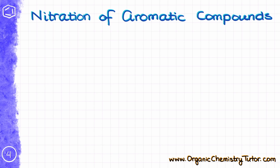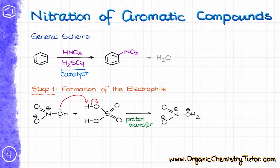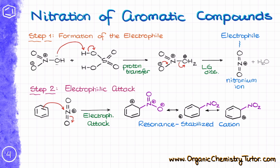The next reaction is the nitration of aromatic compounds. In the general scheme we have nitric acid as the main reagent and sulfuric acid as a catalyst. Nitric acid is not electrophilic enough by itself to tackle the aromatic ring, so it needs help. Because sulfuric acid is a stronger acid than nitric acid, the reaction starts with a proton transfer from sulfuric acid to the oxygen of nitric acid. This forms a protonated nitric acid which quickly undergoes leaving group dissociation, giving us the nitronium ion — our electrophile. The nitronium ion is a strong electrophile that attacks the aromatic ring, forming a resonance stabilized carbocation.